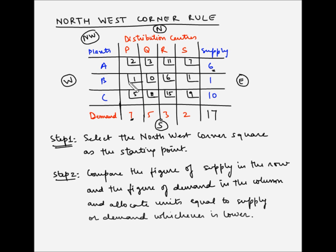Since you can't supply more than six units, the maximum that can be allocated to this square is 6. After allocating six units to square AP, there is no more supply capacity available for A. So we cancel this and make it zero. Since we have already transported six units to distribution center P, the remaining demand is one unit — seven minus six is one — which has not yet been satisfied.